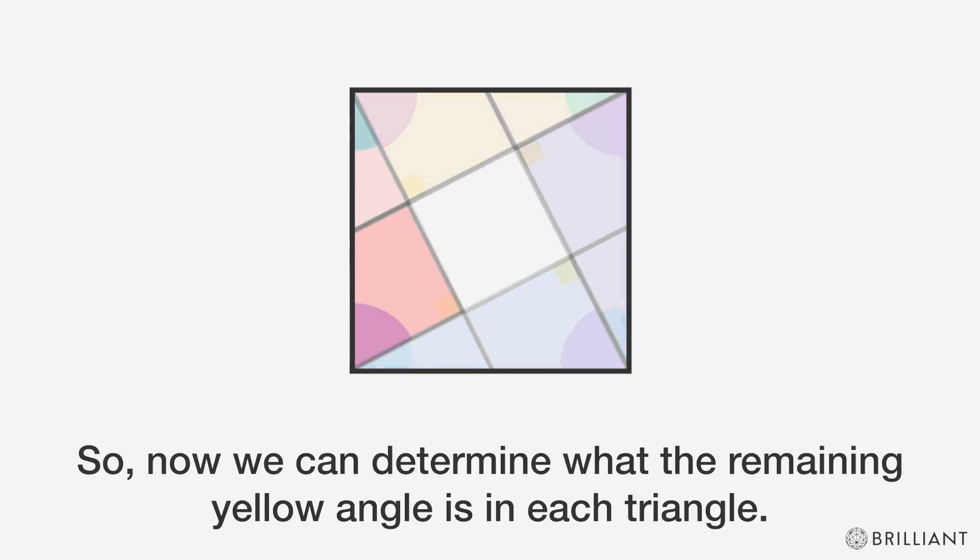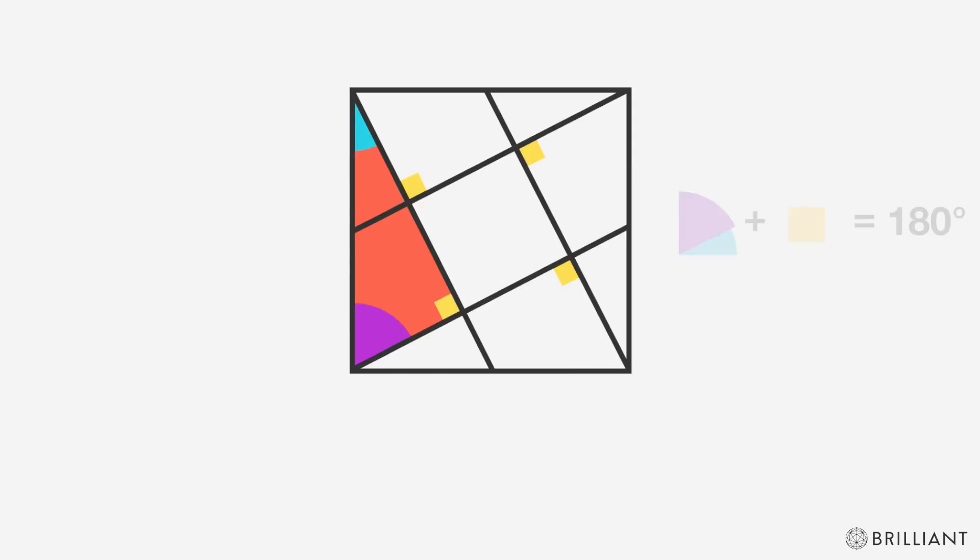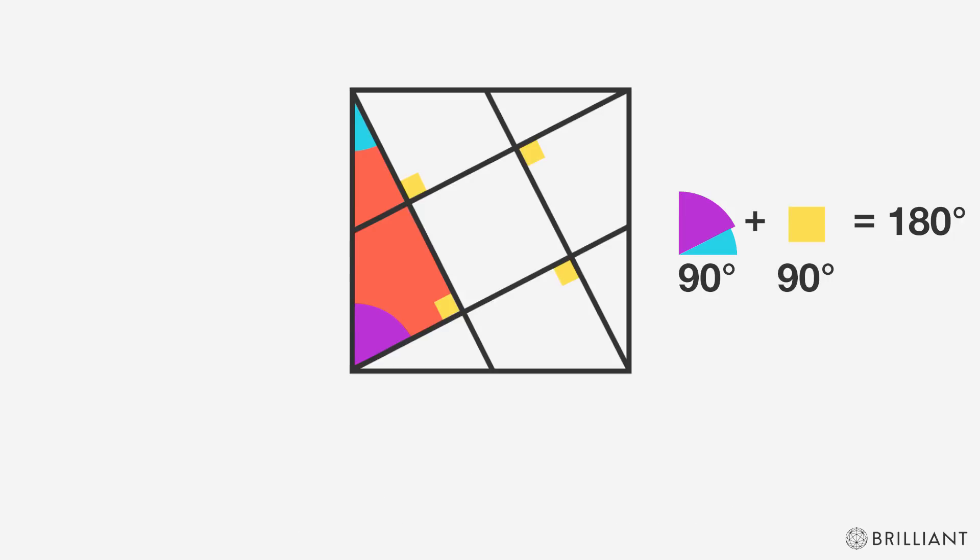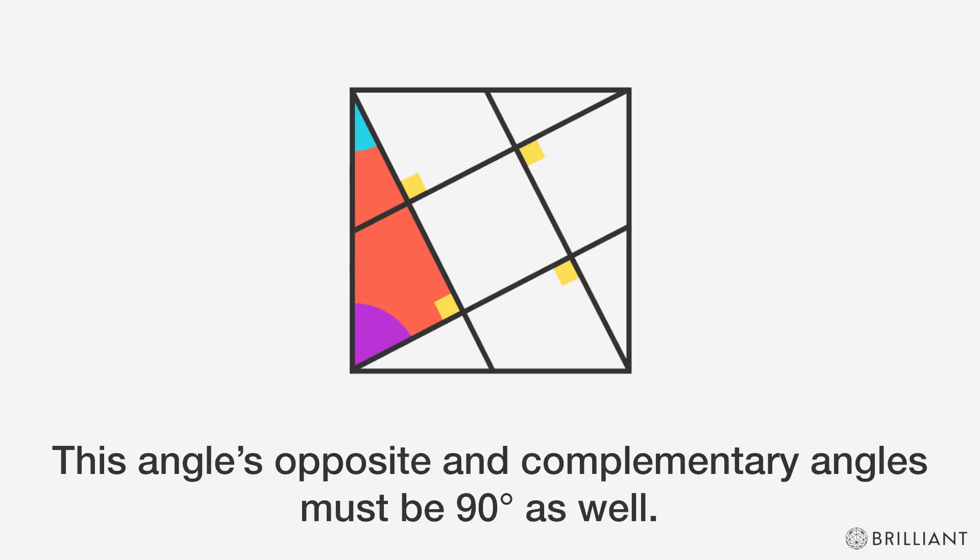So now we can determine what the third yellow angle is in each triangle. Since the triangle's angles sum to 180 degrees, the yellow angle must be 90 degrees. This angle's opposite and complementary angles must be 90 degrees as well.